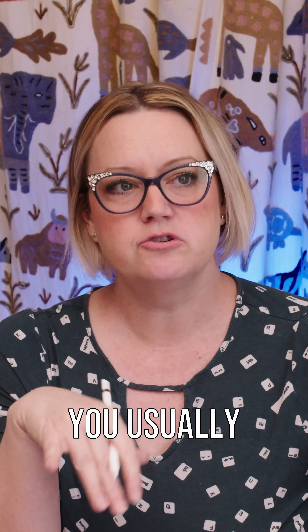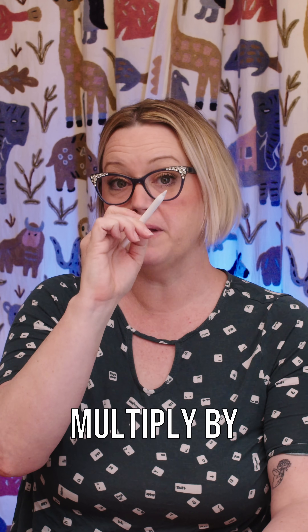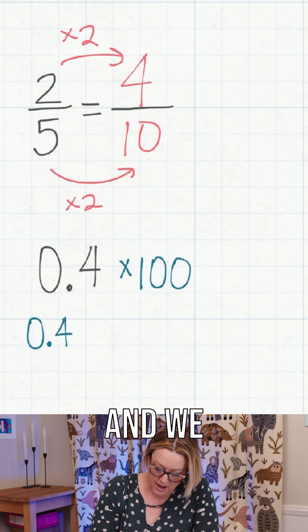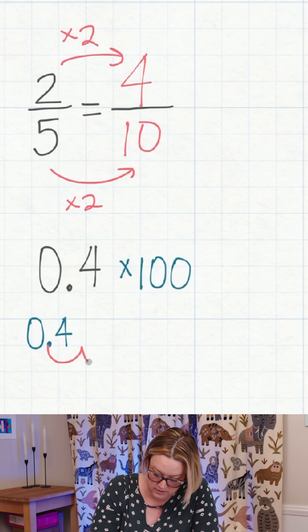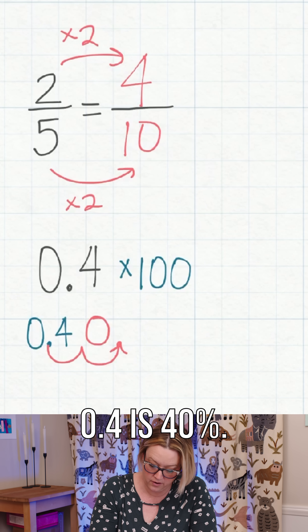To change it into a percent, the easiest way is to multiply that decimal by a hundred. Multiplying by a hundred is all about moving that decimal point — you move it over two places. So if we have 0.4 and we multiply it by a hundred, we're moving that decimal two spots and filling it in with a zero. 0.4 is 40 percent.